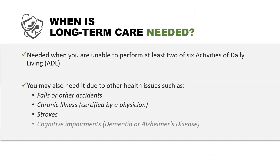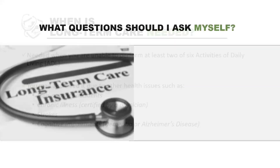When you're unable to perform two of six activities of daily living, that is when the policy gets triggered. It could also be triggered by falls or accidents, chronic illness, strokes, or cognitive impairments. These are all things that could cause the need for long-term care.